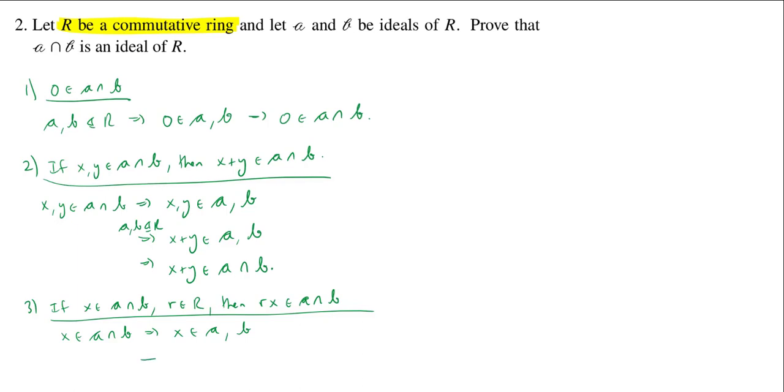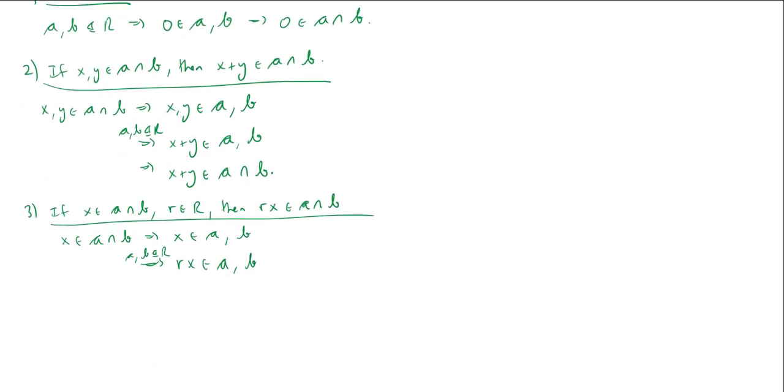But A and B are ideals. A and B are ideals. And because those are ideals, that means they absorb R multiplication. So, Rx is in A and Rx is in B. But if you're in both A and B, then you're in the intersection. So, Rx is in the intersection.